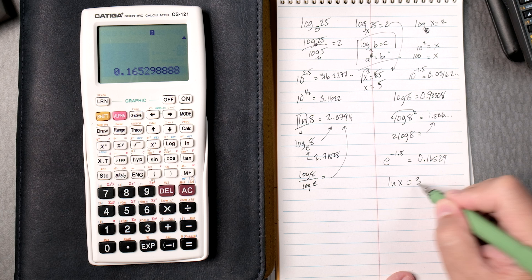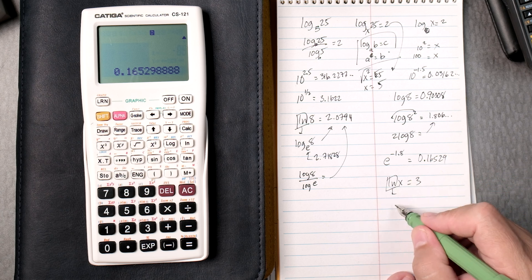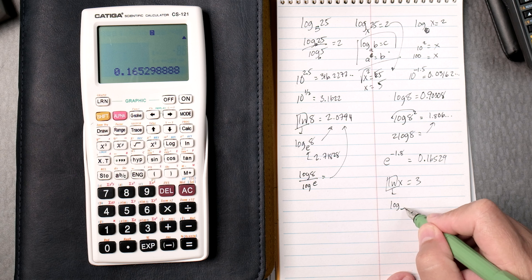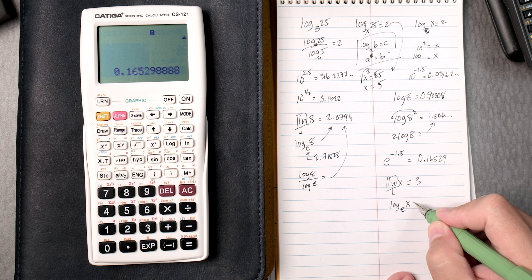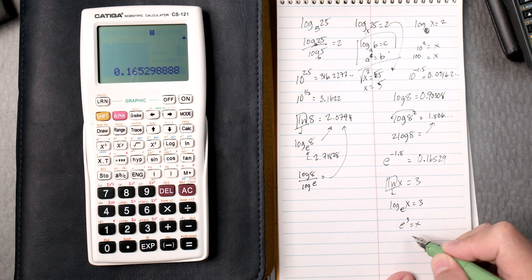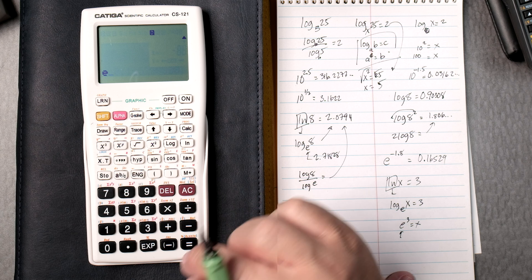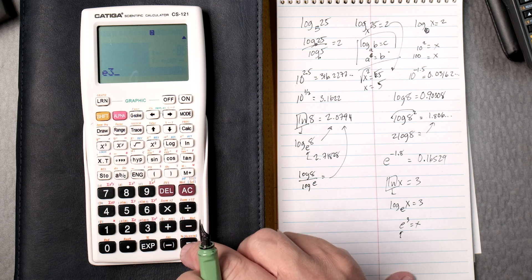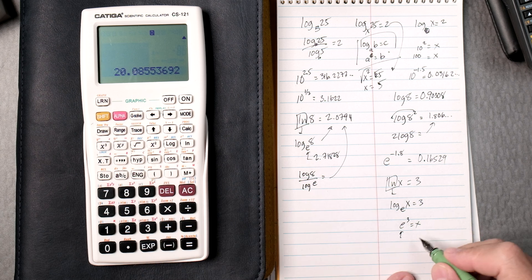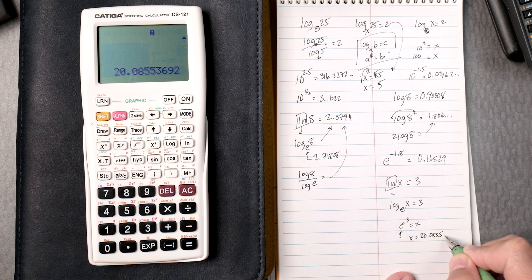Then natural log of x equals 3. Natural log is log base e of x equals 3, so e to the third equals x. What is e to the third? Well, shift natural log, press 3, so it gets e to the third equals, and we get x equals 20.0855, keeps going. That's the answer.